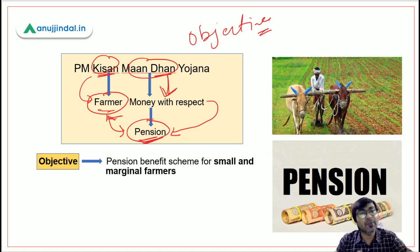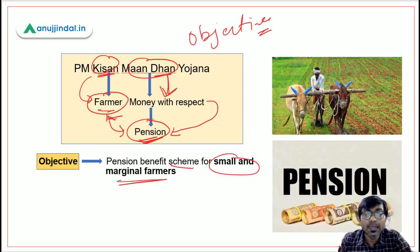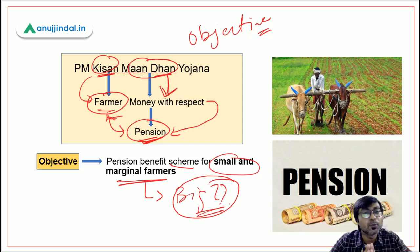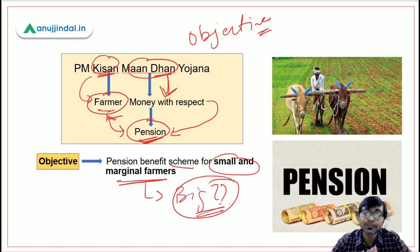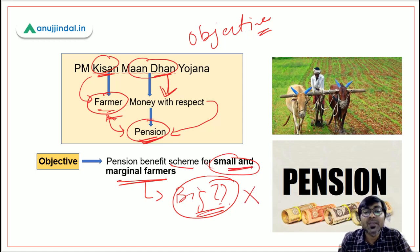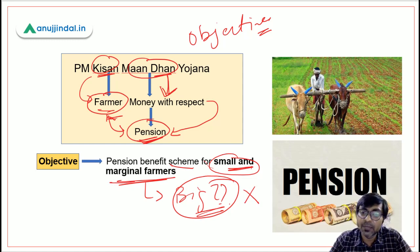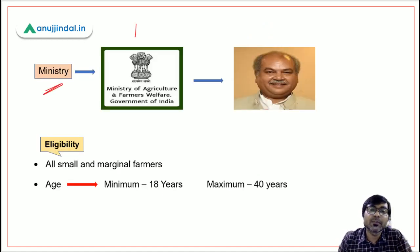From the keywords farmer and pension, we understand that this scheme is a pension benefit scheme for small and marginal farmers. Now why only small and marginal farmers and not big farmers? It is easy to understand — big farmers are self-sufficient and do not require any kind of social support from the government. That's why big farmers are not included.